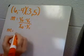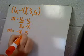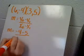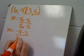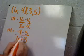Substituting in numbers, I get the equation m equals negative 4 minus 5 over 6 minus negative 3. And when you're subtracting a negative, that's the same as adding.